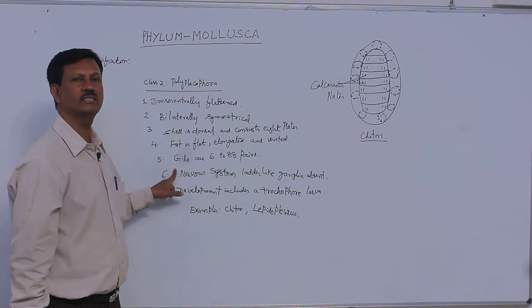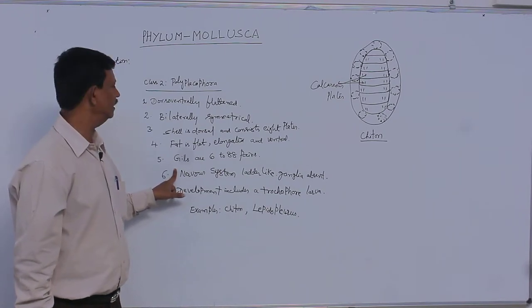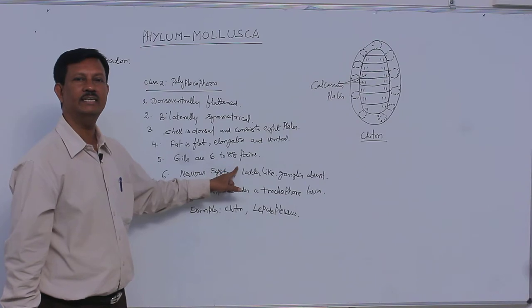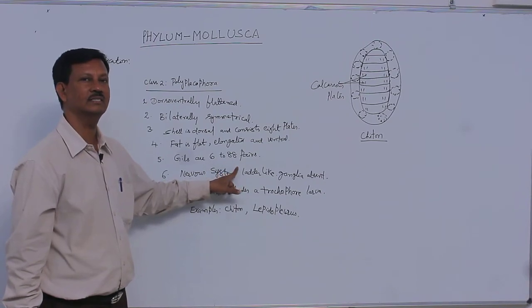Gills. There are a large number of gills present. Here nearly minimum is 6 and maximum is 88. 6 to 88 gills are present in the body.